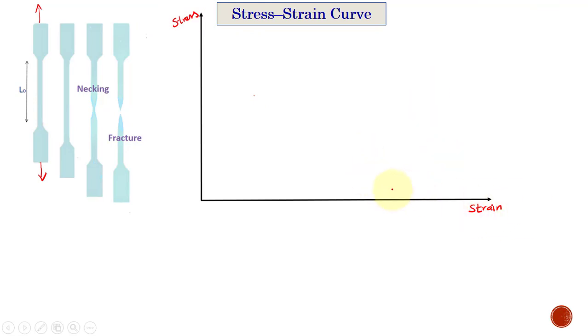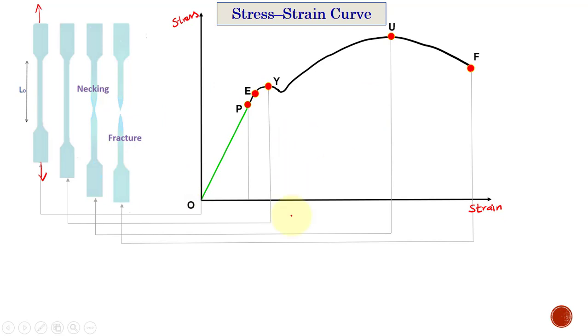The stress-strain curve is a graph that shows the change in stress as the strain increases. When the specimen is subjected to tensile test, we can get that stress-strain relation. The various points on the stress-strain curve are shown here and they are related with this specimen. This is the original specimen.